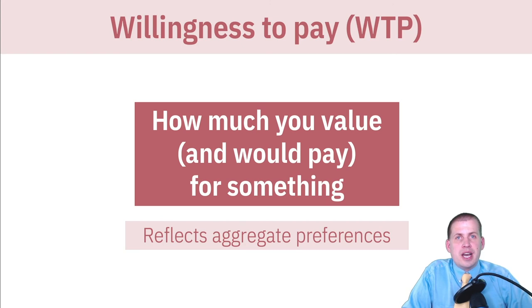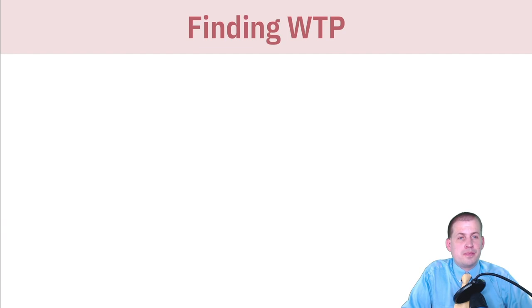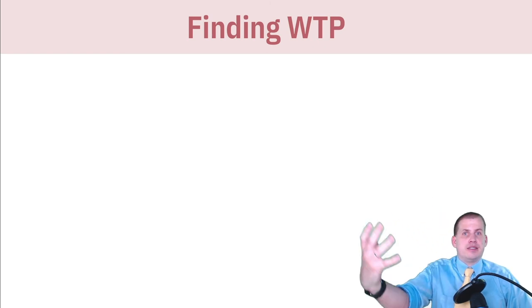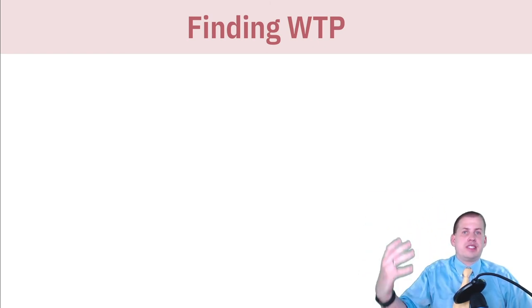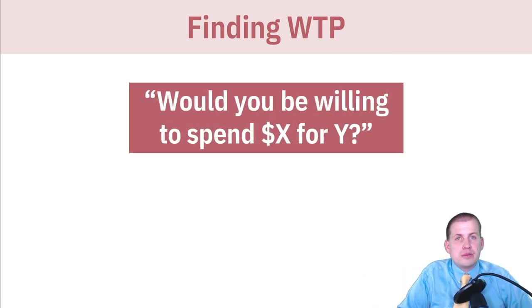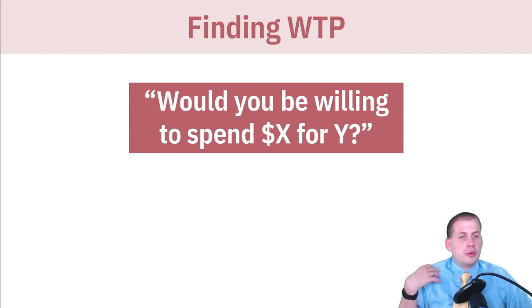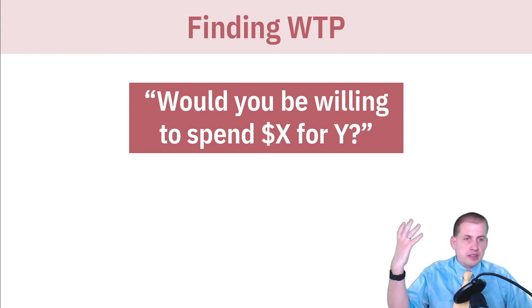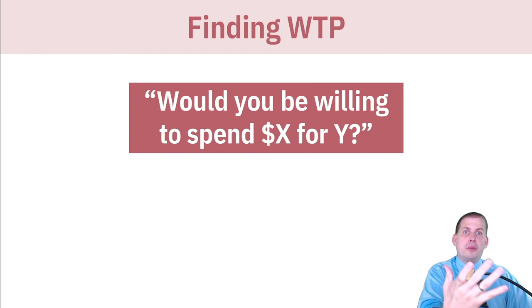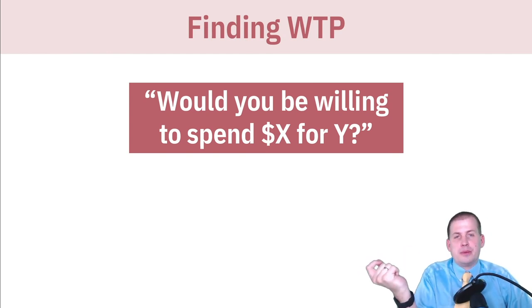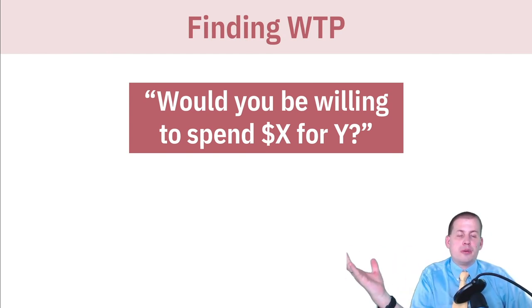You can't read people's minds and actually measure the utils they're getting from different things. But economists have found ways of getting at that using statistics and surveys. To find one person's willingness to pay for something and then aggregate that to all of society, you can essentially send out a survey.